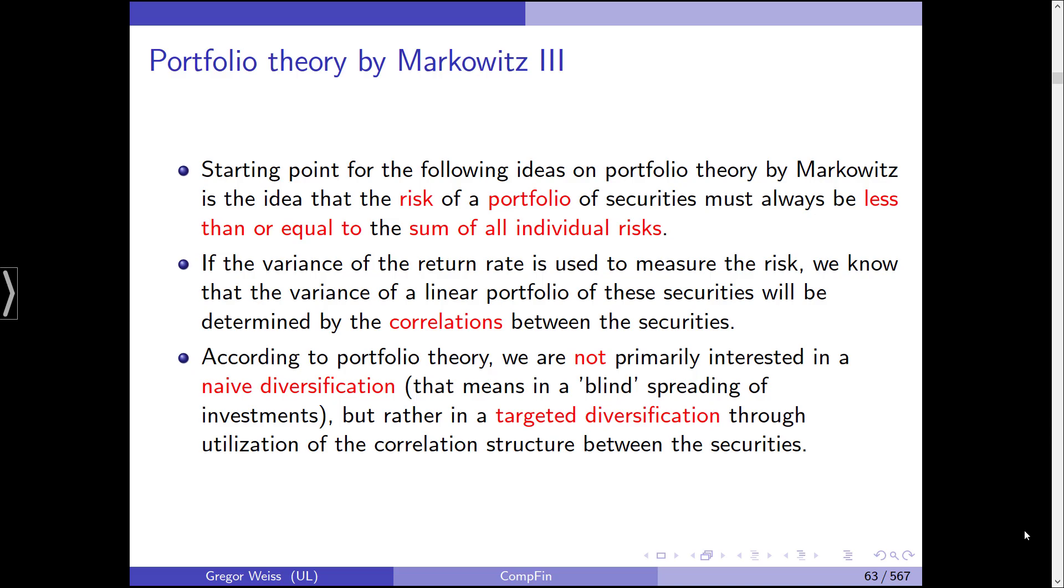Naive diversification means we put one N-th of our money in each and every one of the N stocks. So if you have 10 stocks, 10% stock A, 10% stock B, 10% stock C, and so on. That would be naive diversification, naive in the sense that we don't think too much about why there could be diversification and where diversification could work best. But we just put 1 over N of our whole money into each and every one of our stocks.